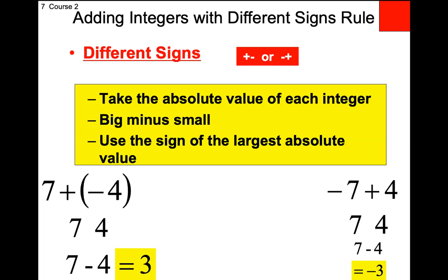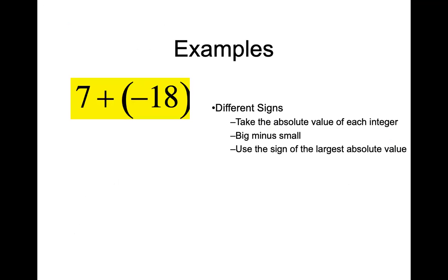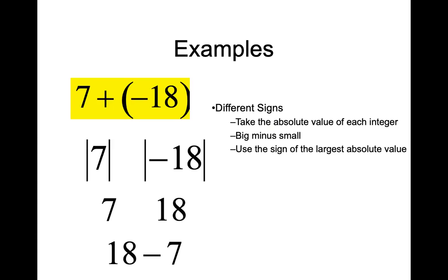New kids — if you learned it a different way and like your old method, stick with that. If you like my method, go with it. Same or different signs? Different. Add or subtract? Subtract. 18 minus seven equals 11. Did we have more negatives or positives? Negative. So negative 11. No one actually writes the absolute value symbols — they just say: different signs, subtract the numbers, 18 minus 7 is 11, more negatives, so negative 11. It can be done that quickly.